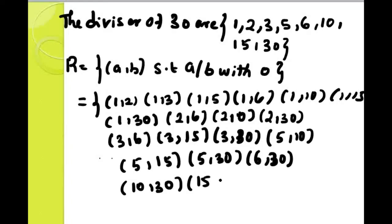Next, take 15: 15 divides 30. Next, take 30: 30 divides 30, but you get remainder 0, so you get a self-loop — that means reflexive. These ordered pairs satisfy the given condition: A divides B with remainder value 0. The divisors of 30 total 8 elements, so the maximum possible ordered pairs is 64. Out of 64 ordered pairs, only those satisfying the condition A divides B with remainder 0 are valid.